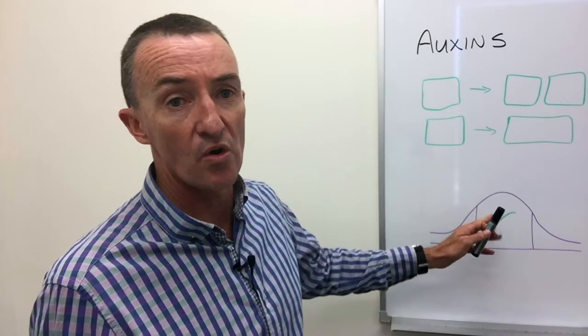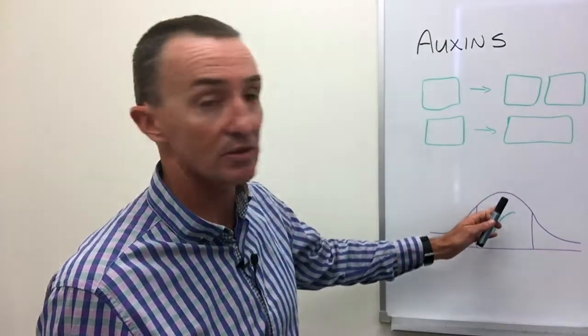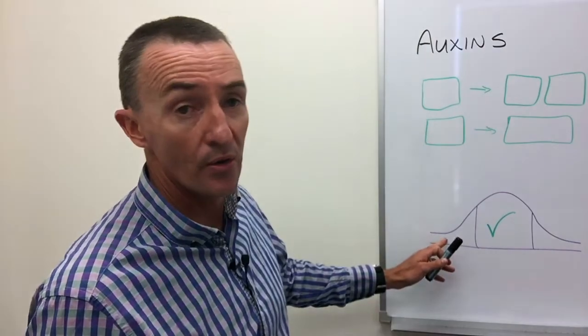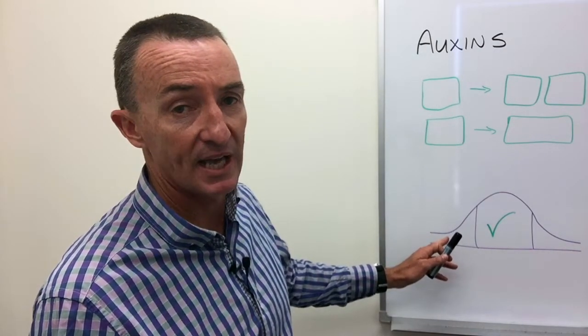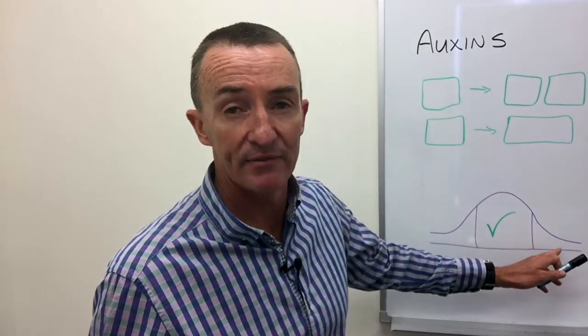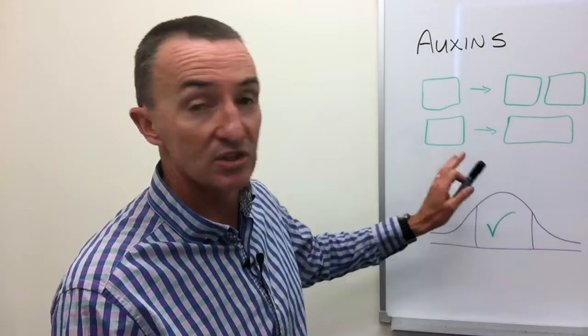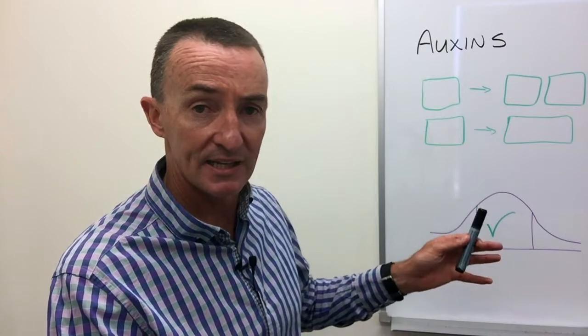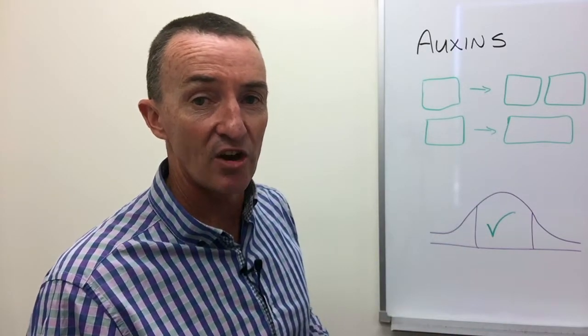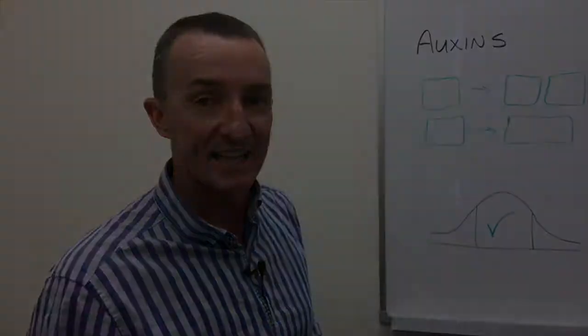The auxinic hormones need to be at just the right level. Too low and there's no stimulation of plant growth. Too high a level and plant growth is overstimulated. Auxins are turned on and off as the plant needs to grow so that cell division and cell elongation can be regulated.